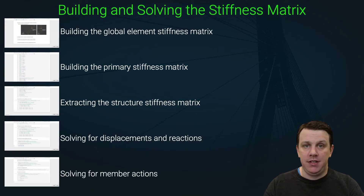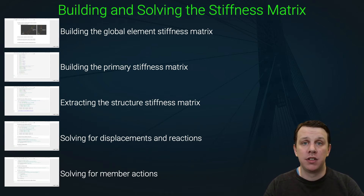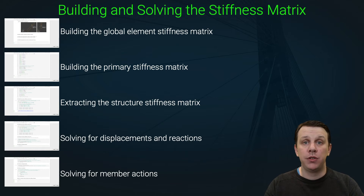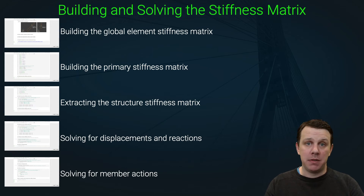element stiffness matrix that we derived way back in section two, and we're going to combine that with the transformation matrix that we looked at in the previous section, and we're going to produce for each element the global element stiffness matrix. We're then going to combine these global element stiffness matrices in the usual way into the primary